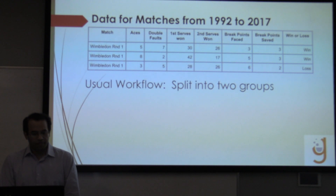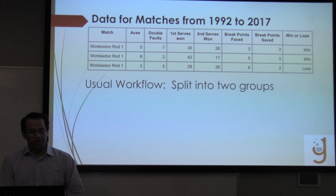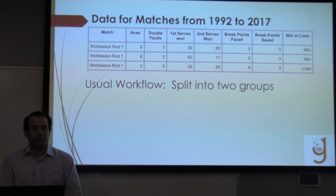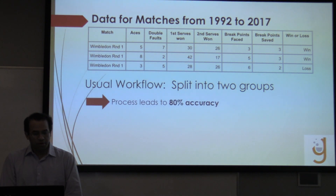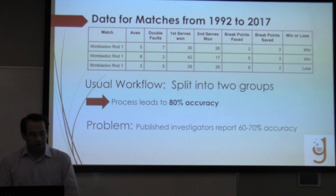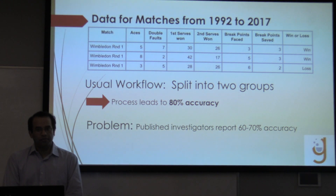Typically, the workflow for this is to split the data into two parts: one set that trains a model and then the next set that sees how well the model does. Following this procedure, it leads to an accuracy of 80%. This is a little problematic because public investigations have shown accuracy between 60 and 70% for tennis predictions.